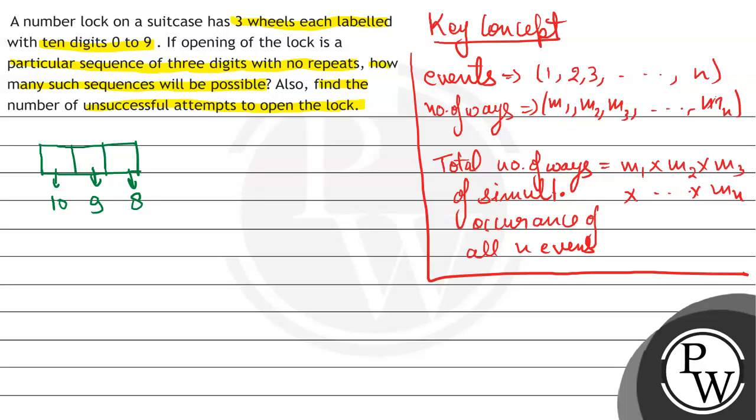तो total sequences कितने possible हैं, यह find करने के लिए, total possible sequences is equal to सारे places के possible ways को multiply कर देंगे: 10 × 9 × 8, यह आगया 720.